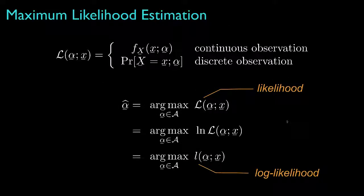In summary, for maximum likelihood estimation, we begin by identifying the likelihood from the statistical model that relates the observed data to the unknown parameter, and then we solve an optimization problem where, for many situations, we take advantage of the fact that the maximizer for the likelihood is also the maximizer for the log likelihood.